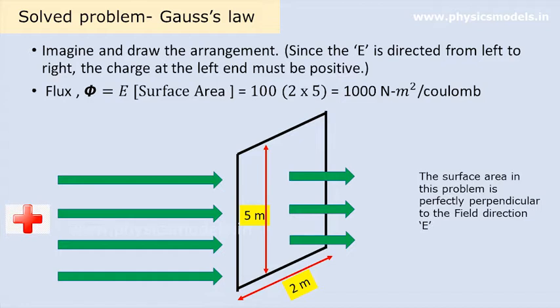Draw the rectangular plane surface. Put in the dimensions 5 meters and 2 meters. That makes the surface area equal to 10 meters squared. And since the surface is exactly perpendicular to the direction of the electric field, the normal to the surface is along the electric field. So cos 0 is 1.